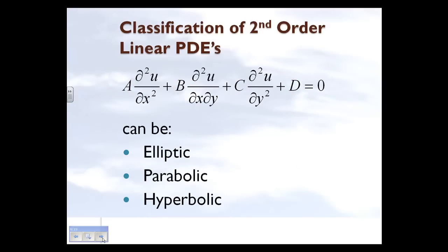Second-order linear partial differential equations are classified into three categories: elliptic, parabolic, and hyperbolic. What makes a particular second-order linear PDE elliptic, parabolic, or hyperbolic depends on the values of a, b, and c.